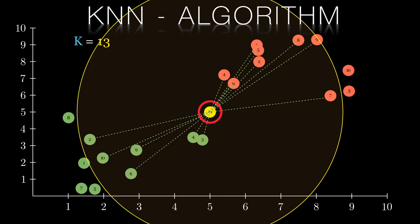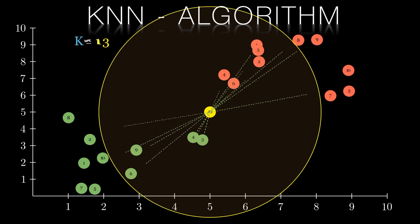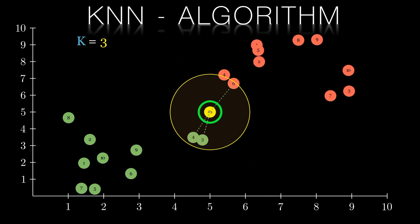More precisely, this will be a majority vote if we have two classes, that's to say a binary classification problem, or a plurality vote if we're deciding between three or more classes.